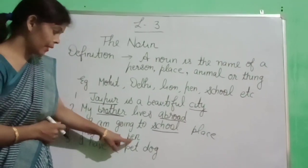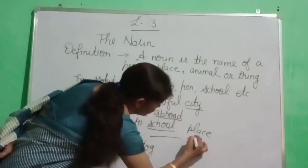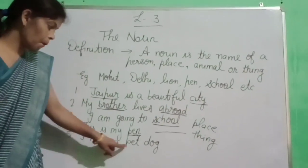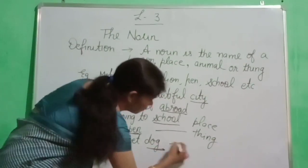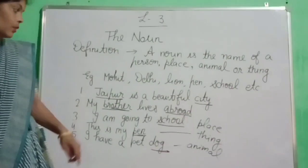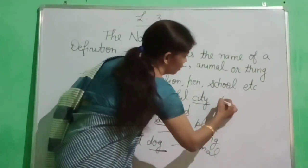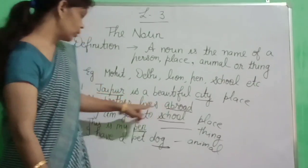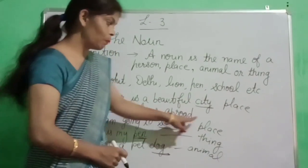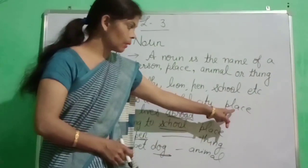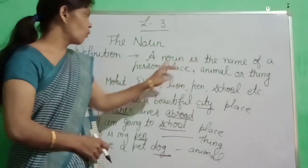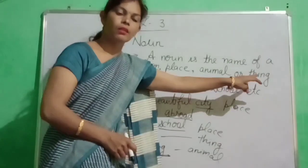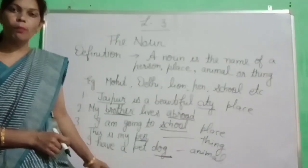This is my pen. Pen — pen kya hai? Kisi thing ka name hai na? Thing hai. Clear? Fifth: I have a pet dog. Dog kya hai? Kisi animal ka name hai na. Clear? So in these sentences: Jaipur — place, brother — person, abroad — place, school — place, pen — thing, dog — animal. Noun is the name of a person, place, animal or a thing. Now we will do this from our book.